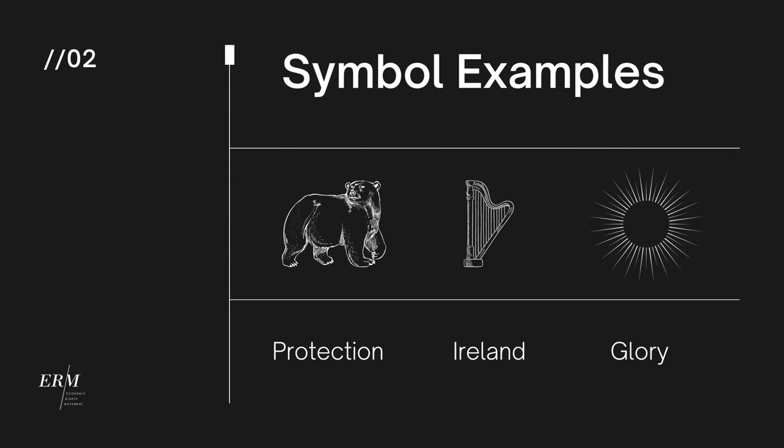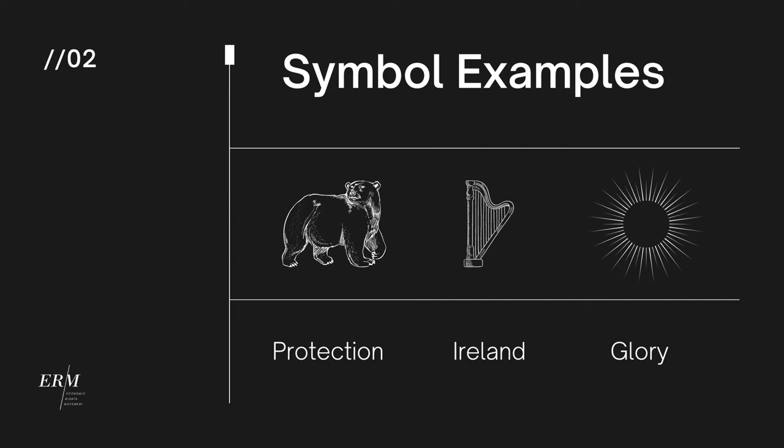Here are some more examples of symbols and their meanings. A bear means protection, a harp denotes Irish origin, and the sun represents glory. The lily represents purity, prosperity, and good luck — they are often used in weddings to symbolize well wishes.